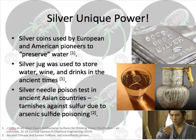First of all, we all know silver as a valuable metal. However, the antimicrobial effect of silver has been known since antiquity. European and American explorers used silver coins in their water containers to preserve water. Ancient Greeks and Egyptians used silver jugs to store water, wine, and their other drinks. We also see interesting silver usage in Chinese and Korean folklore. Silver needles were used for poison tests by Eastern medicine practitioners. This, however, could not be proven scientifically.